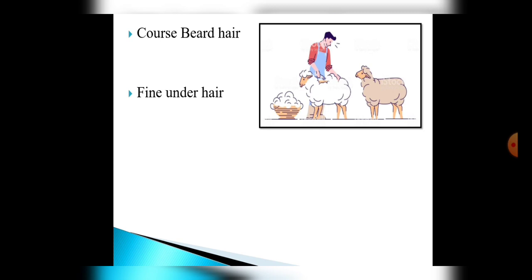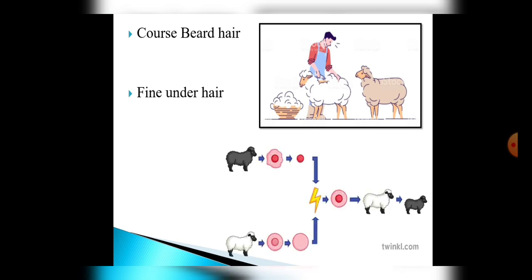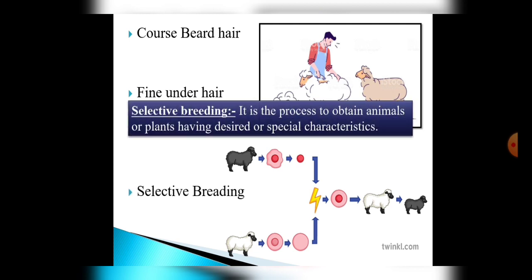Now look at this picture. This is called selective breeding, which is a process to obtain animals or plants having desired or special characteristics. That means two sheep of good characteristics are selected for the production of a new young virgin lamb.